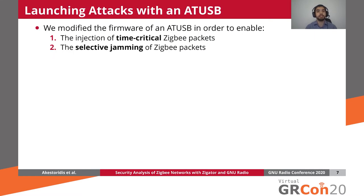So far, we discussed scenarios where we opted to use a software-defined radio. However, there are still cases where it's much easier to achieve the desired outcome with a dedicated IEEE 802.15.4 transceiver. One such case is the injection of a time-critical Zigbee packet, such as the injection of a MAC acknowledgement. We can easily achieve that by modifying the firmware of an IEEE 802.15.4 USB adapter, and in our case, we decided to do that with an ATUSB. Similarly, another functionality that we need for our testbed is the ability to selectively jam Zigbee packets, and again we achieved that by modifying the firmware of an ATUSB.